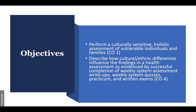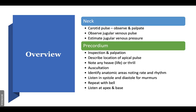The objectives of this lecture: review inspection, percussion, palpation, and auscultation of the most essential cardiac and neck vessels. In the neck, we'll assess the carotid pulse, observe jugular venous pressure, estimate how to calculate jugular venous pressure, and look at all aspects of the precordium — inspection, palpation, describe the location of the apical pulse, and note a heave or a thrill.